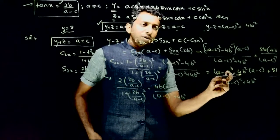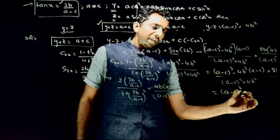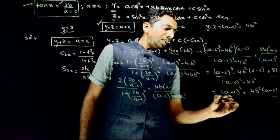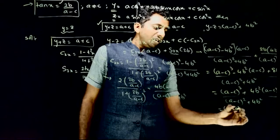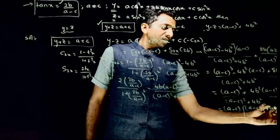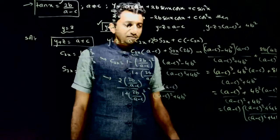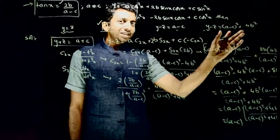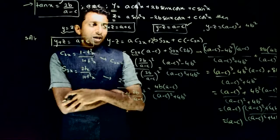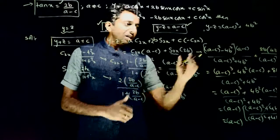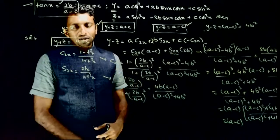Taking (a minus c) common from the numerator: we get (a-c) times [(a-c)² plus 4b²] divided by (a-c)² plus 4b². The denominator terms cancel, and what we are left with is simply a minus c. So y minus z is equal to a minus c. After all the simplification, it has finally boiled down to a minus c.